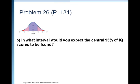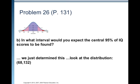In what interval would you expect to find the central 95 percent of IQ scores? Well, we already figured that out. And so it would be between or on the interval 68 to 132.